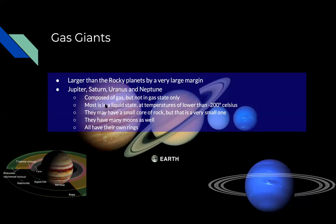Okay, good. These gas giants have a small core of rock that may not be much bigger than Earth, or might even be smaller than Earth. That's just to give the liquid something to adhere to. They have many moons — all of them have more than one moon — and all of them have their own ring system. So all of them have rings like Saturn.